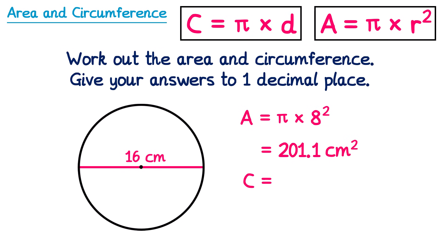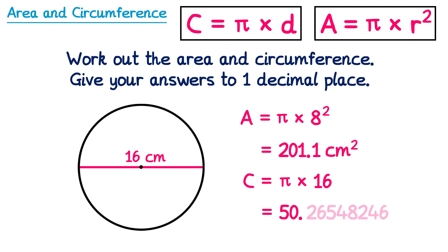And now for the circumference, we do pi multiplied by the diameter, which is the number given on the circle: 16. Rounded to one decimal place, we get 50.3. Don't forget the units — centimetres, not centimetres squared this time.